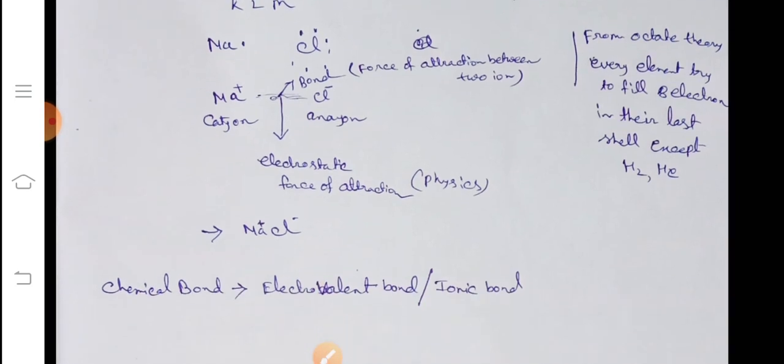But here chemical bond is called, this bond, Na and Cl, this bond is called electrovalent bond and ionic bond. In this case, this bond is called electrovalent bond and ionic bond.